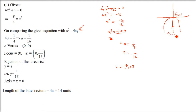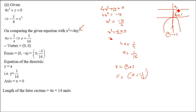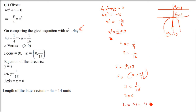Vertex is (0, 0). Since it's along the y-axis opening downward, focus is at (0, -a) = (0, -1/16). The directrix is at y = a, so y = 1/16. The axis of symmetry is the y-axis, so x = 0.